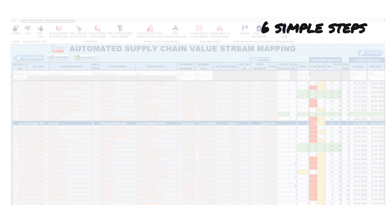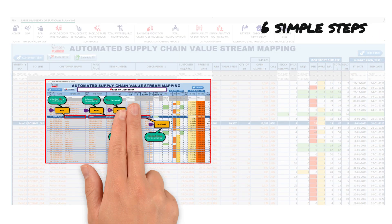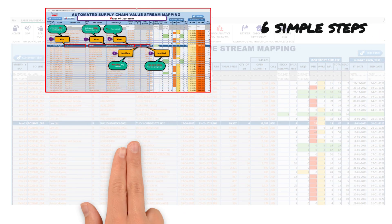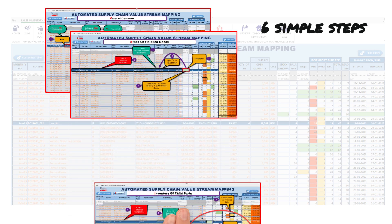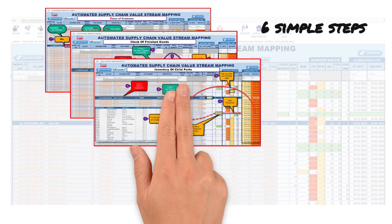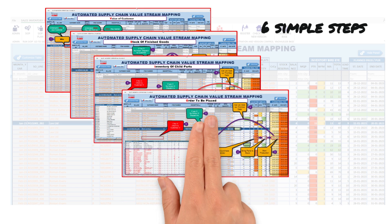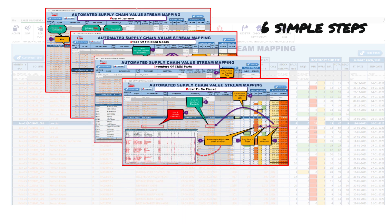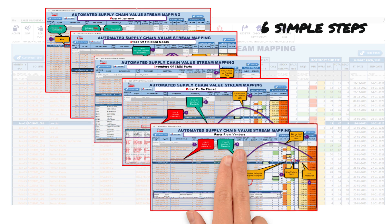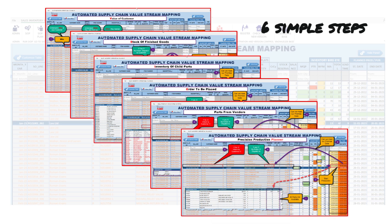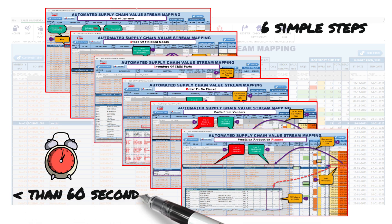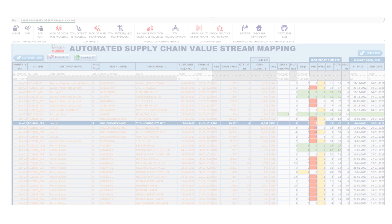What truly sets our application apart is its simplicity and efficiency. We've distilled the complex process of supply chain management into six straightforward steps, enabling you to optimize your manufacturing operations in less than 60 seconds. Here's how it works.